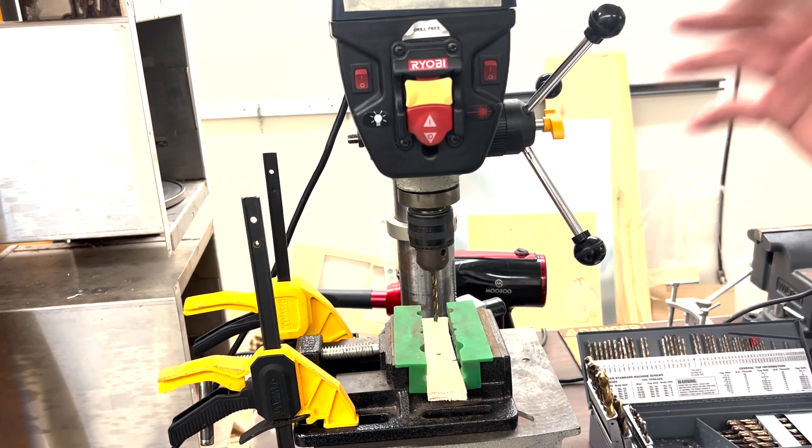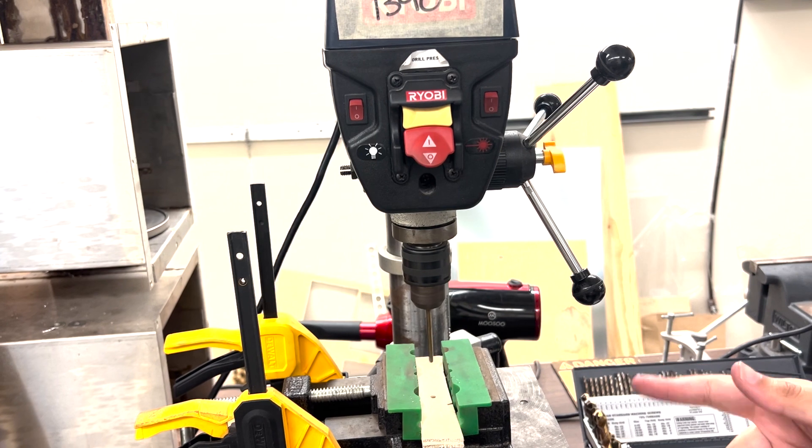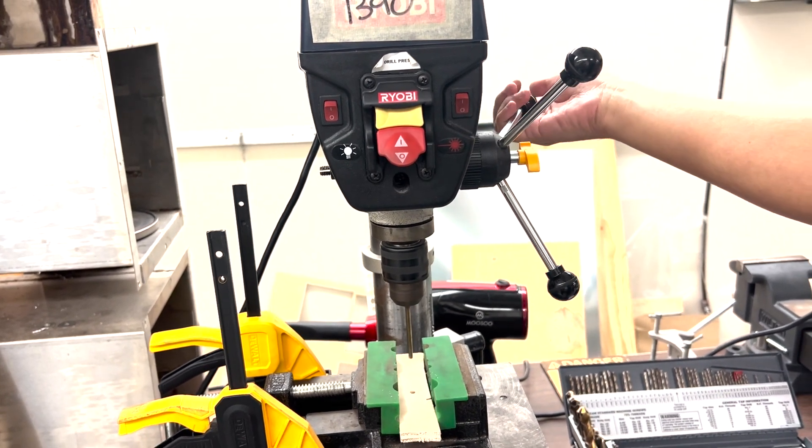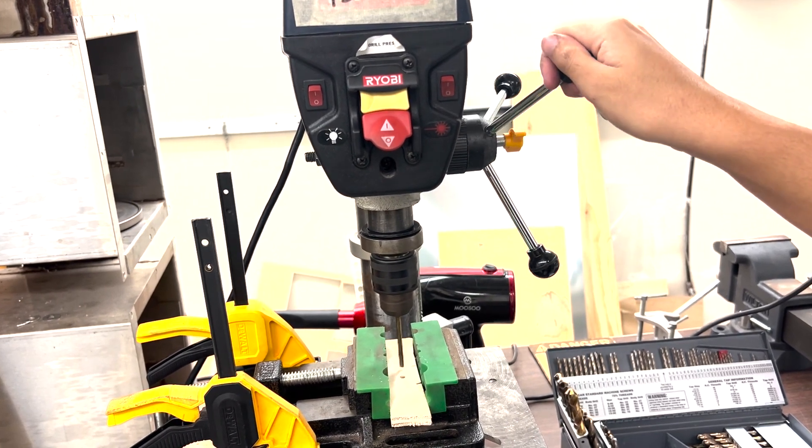In order to turn on, flip the power switch upward. You'll see the bit start to turn. From there, you want to use your right hand and slowly turn the feed handle to hit the material.